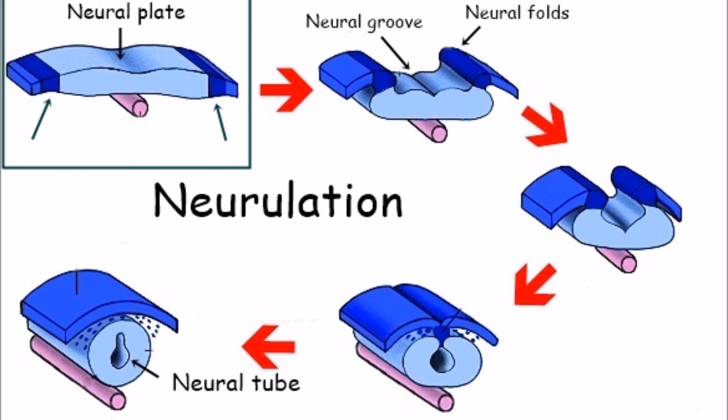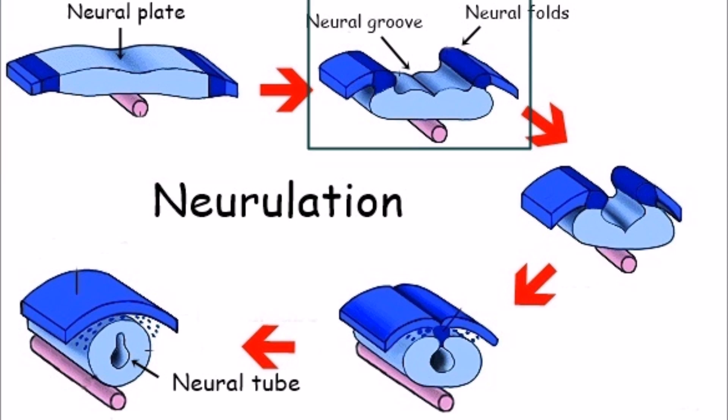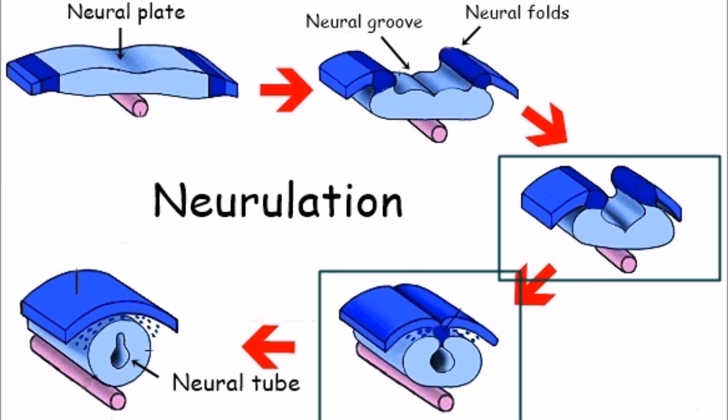By the end of the third week, the lateral edges of the neural plate become elevated and they form the neural folds. The depressed mid-region forms the neural groove. Gradually, the neural folds approach each other in the midline and fuse.